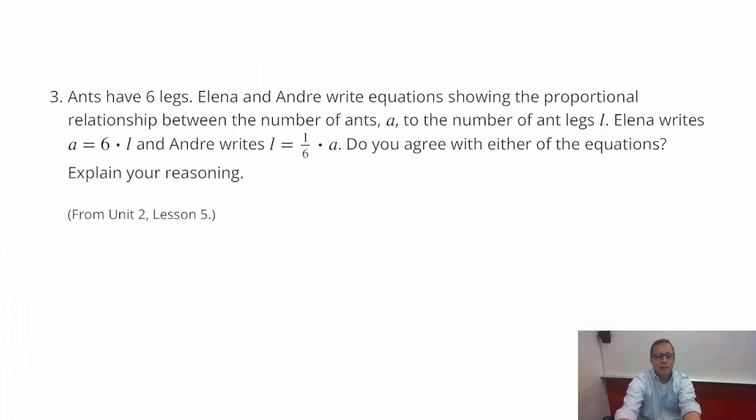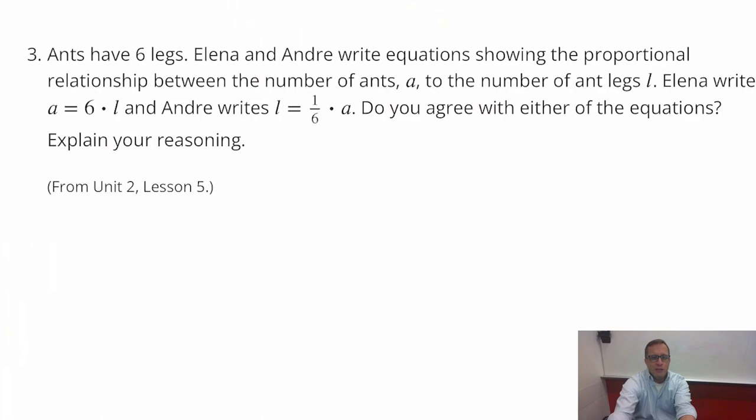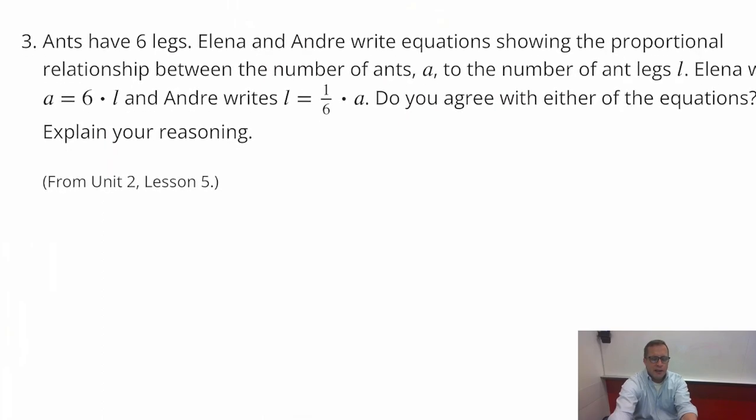Number three. Ants have six legs. Elena and Andre write equations showing the proportional relation between the number of ants, A, to the number of legs, L. Elena writes that A equals six times L and Andre writes that L equals one-sixth times A is equal to the number of legs. Do you agree with either of their equations? Explain your reasoning. Well, instead of just looking at them, let's actually put some numbers in there. So A is the number of ants, L is the number of legs. We know that an ant has six legs.